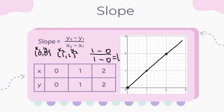Another way is using the graph, which is rise over run. The rise is 1, and the run is also 1. So you do 1 over 1, and then you get the slope of 1.